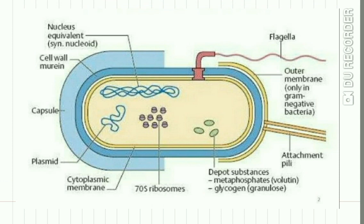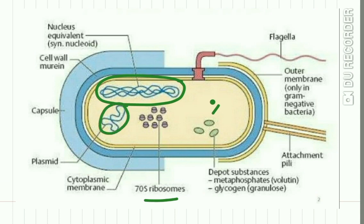The cell consists of a cell wall and a plasma membrane, and together they form the cell envelope. This cell envelope encloses the protoplasm, which includes the cytoplasm and cytoplasmic inclusions such as mesosomes, ribosomes, inclusion granules, DNA or RNA present inside the cell, vacuoles, plasmids, and glycogen and metaphosphate substances. Some cells also have additional structures such as flagella, fimbriae, and capsule.